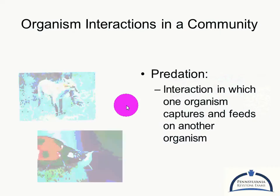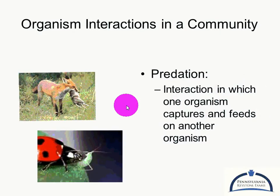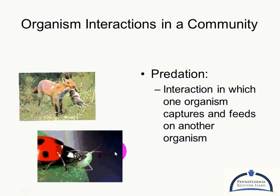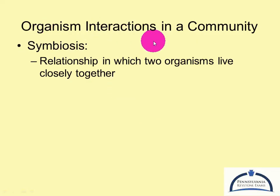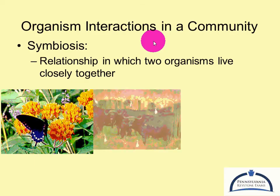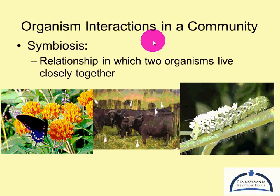We also have predation: one animal looks like food, so another animal eats it. Here we have a fox eating some sort of mammal, and a ladybug eating an aphid — a predator-prey relationship. Then we have symbiosis, and we can break symbiosis into three separate groups. With symbiosis — I think of 'sym' meaning together — these are organisms that live closely together. It could be a relationship that benefits both, a relationship where only one is benefited, or a relationship where one is significantly harmed. Each of these has a different term.